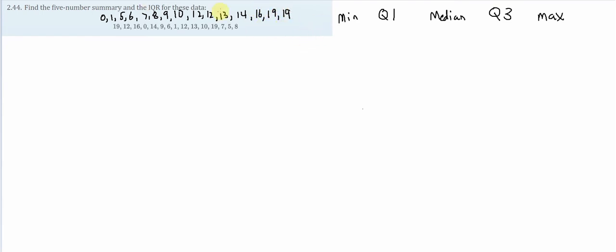So here it is in order. So let's start filling this out. Minimum is the lowest value, right? And we can see the lowest number in this data set is 0. The maximum is the highest. We can see the maximum is 19.